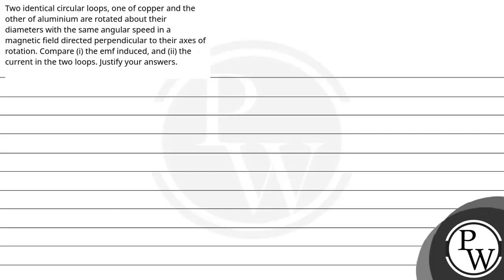Hello Batom, let's read this question. The question says two identical circular loops, one of copper and the other of aluminum, are rotated about their diameters with the same angular speed in a magnetic field directed perpendicular to their axis of rotation. Compare first the EMF induced and second the current in the two loops. Justify your answers.